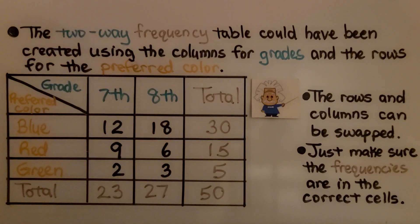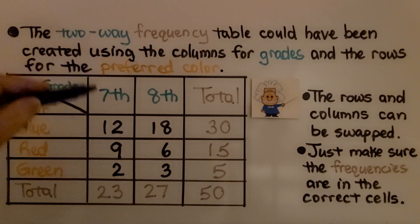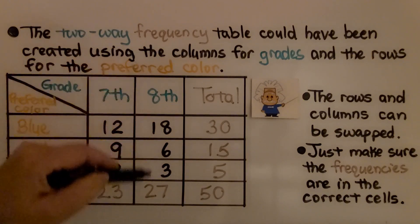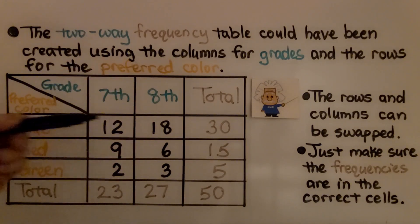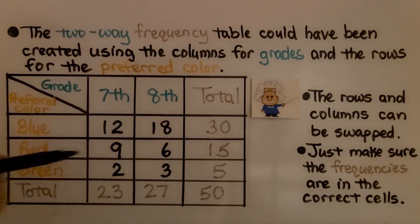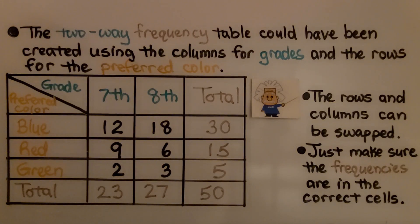I also wanted to point out that the two-way frequency table could have been created using the columns for grades and the rows for preferred color. The rows and columns can be swapped — we just make sure the frequencies are in the correct cells.